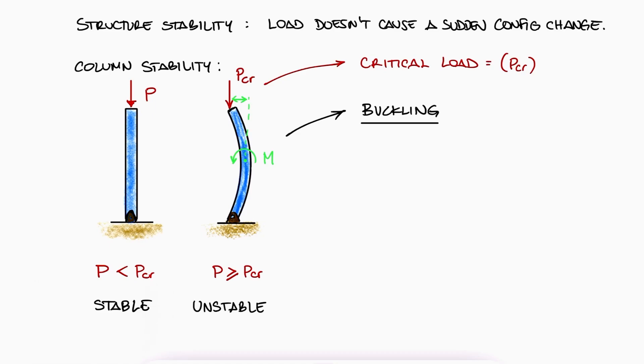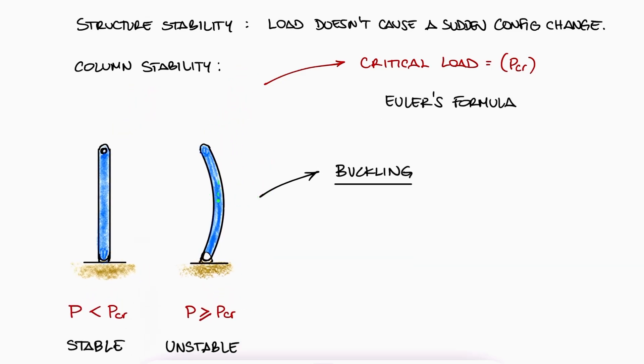The critical load P_cr can be calculated using Euler's formula, which is derived from the case where the column is pin-ended, meaning pin supports at both ends, top and bottom.